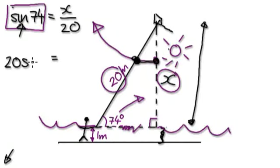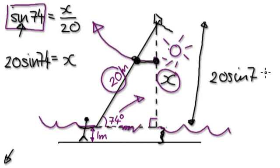So it would be 20 sine 74 equals x. So the height of this would be 20 sine 74. That would give you the height. And then we would need to add 1, an extra 1 here.